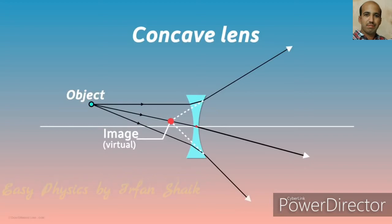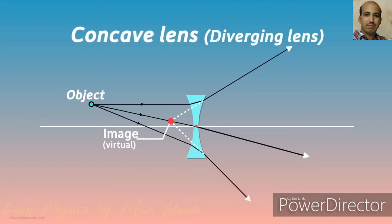As the concave lens diverges light rays, it is called a diverging lens.